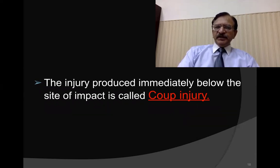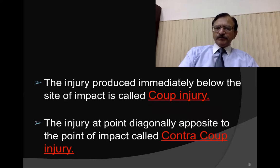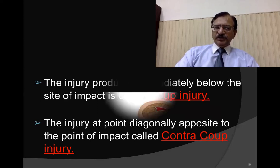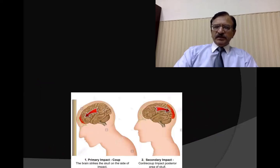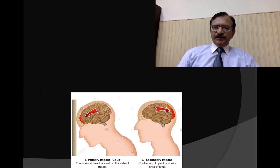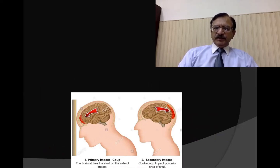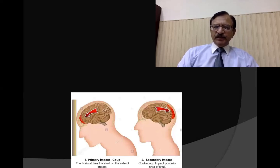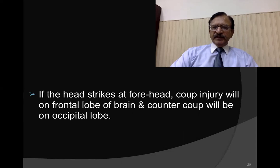The injury produced immediately below the site of impact is called the coup injury, and the injury at a point diagonally opposite to the point of impact is the contra-coup injury. In the diagrammatic picture, you can see the frontal region striking a stationary object — this is the coup point — and exactly opposite is the rarefaction, which is the contra-coup. So if the head strikes at the forehead, the coup injury will be on the frontal lobe of the brain, and the contra-coup will be on the occipital lobe.